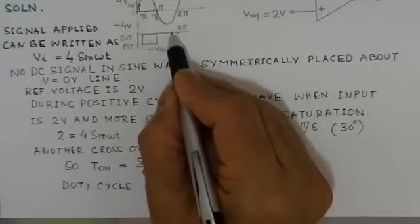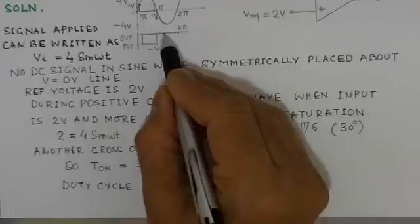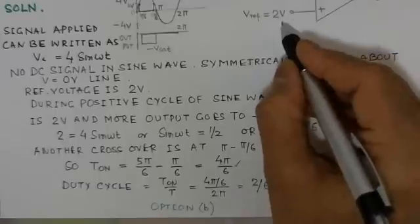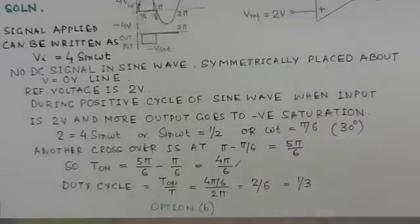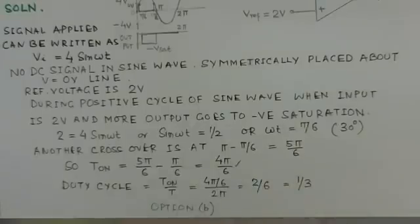For the negative cycle of the sine wave, the output will not change and will remain in the same state since it does not cross the plus 2 volts reference. The answer is option B, duty cycle of 1/3.